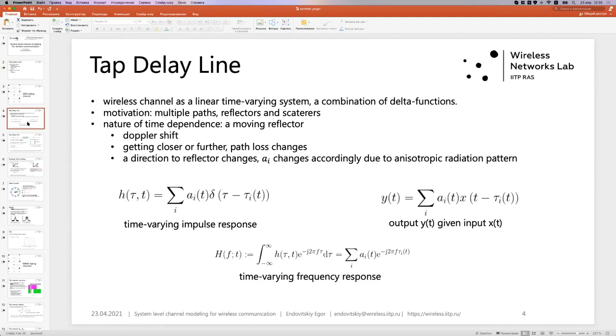Now start with the tap delay line. The first thing to grasp is that a wireless channel is modeled as a linear time-variant system. In particular, a combination of delta functions, its left upper picture. So it is a time-variant impulse response. What is the motivation for such model? For a signal, there might be multiple paths to get to a receiver. Several reflectors, several scatterers.